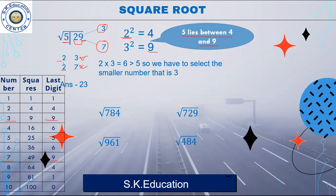How will we find out which one? You will multiply: 2 multiplied by 3 is equal to 6. Now we find out that your number 5 is less than 6. Since 5 is smaller than 6, we will take the smaller number. So our answer will be 23.